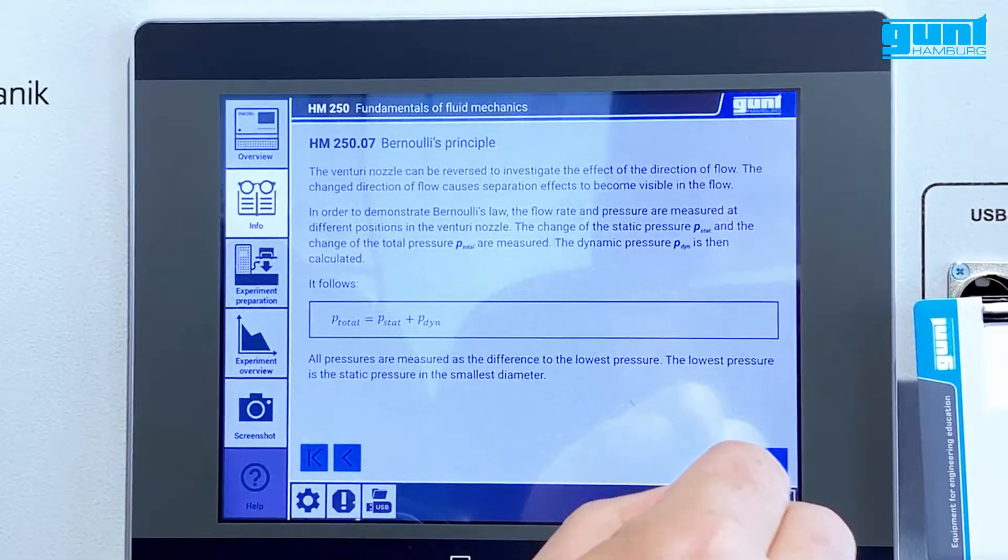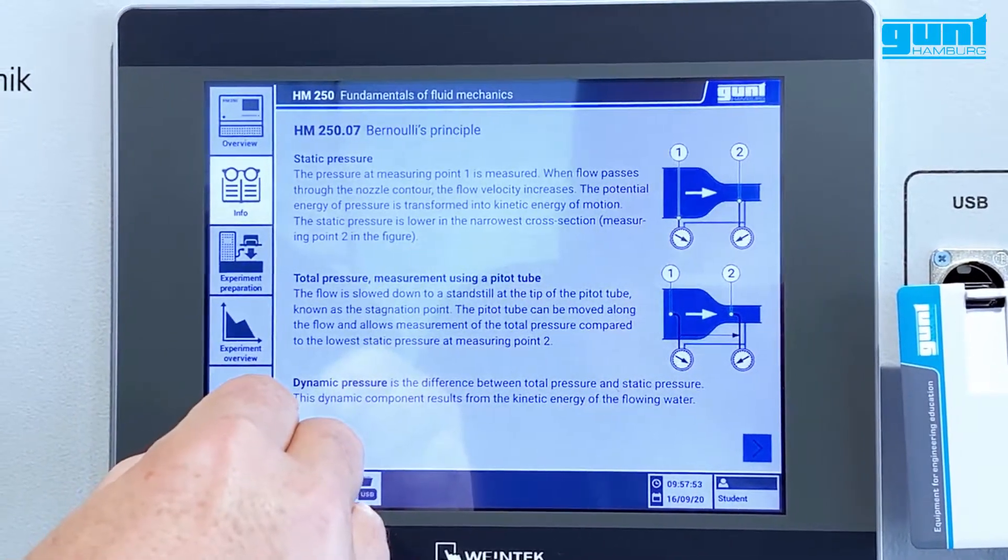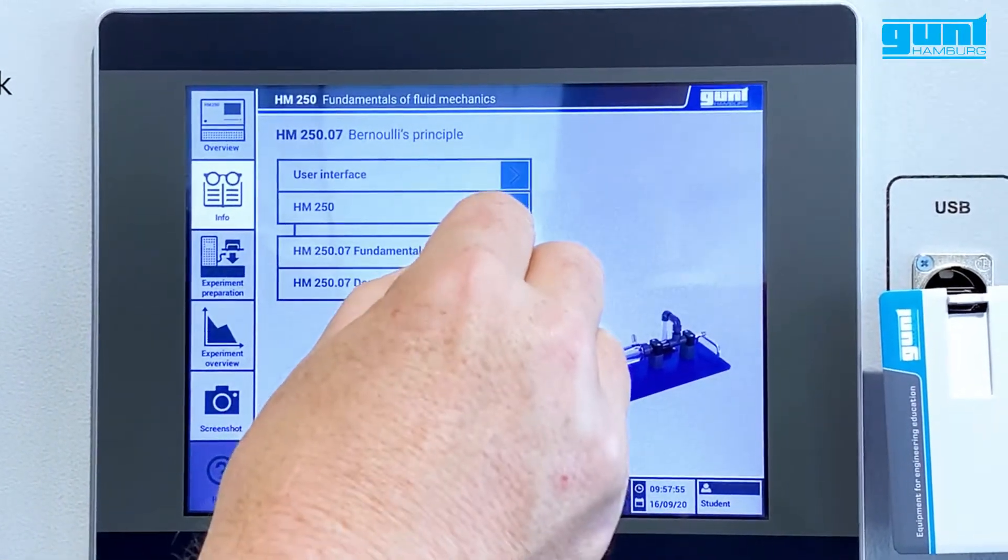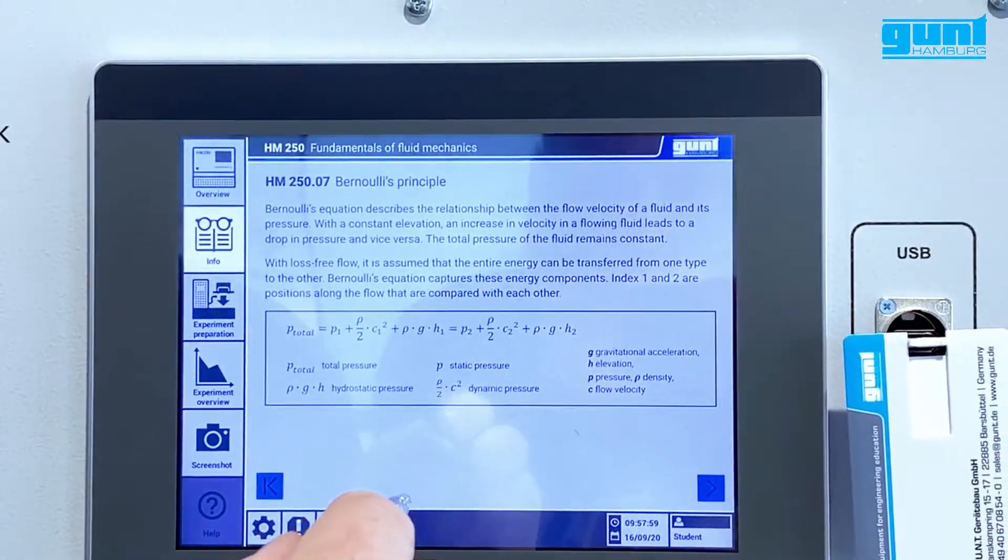Thanks to the WiFi capability, this content can be displayed on up to 10 separate units individually. This is the home screen under the info section of the HMI.